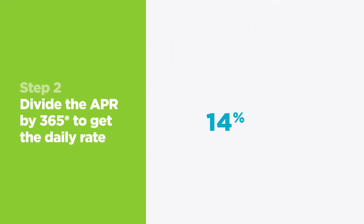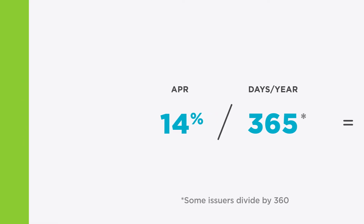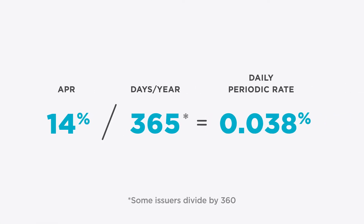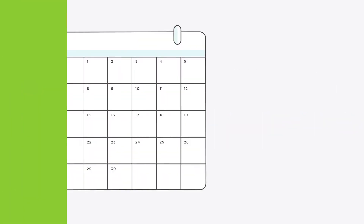Step 2: Divide the APR by 365 to get your card's daily periodic rate. This is important because your card issuer charges interest on a daily, not annual, basis. Save this number — we'll come back to it later.